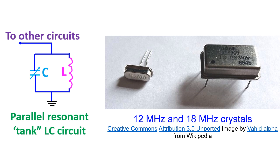RC oscillators are used in the low frequency range, typically for audio frequency signals. RC oscillators with an inductor and capacitor have a tuned circuit instead of the RC network, and are used in high-frequency applications like radio transmitters and local oscillators of radio receivers.